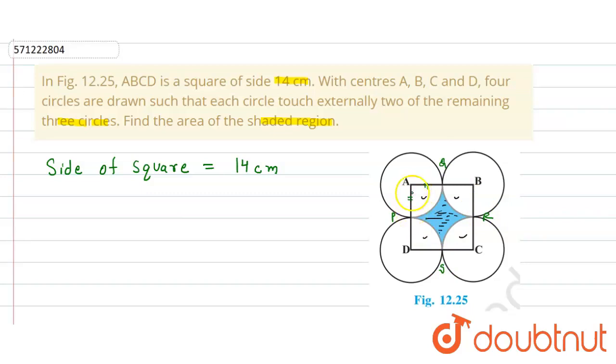So here AP will be the radius of the circle and radius of all the circles are equal. So the radius of circle will be equal to half of the side of the square. Side of square is 14 centimeter, so radius will be 14 divided by 2, that is equal to 7 centimeter.